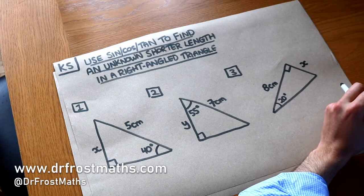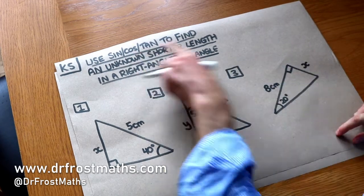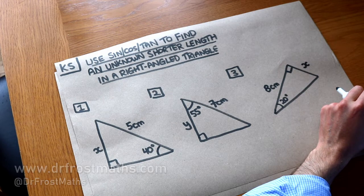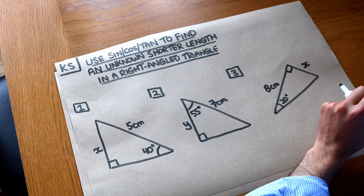Hello and welcome to this Dr. Frost Maths key skill video on using sine, cos, and tan to find an unknown shorter length in a right-angled triangle. We're going to use something called trigonometry to do this.